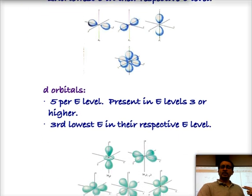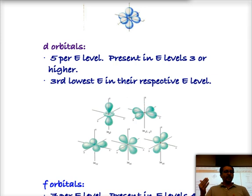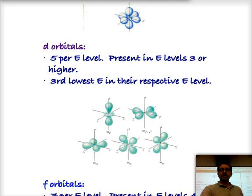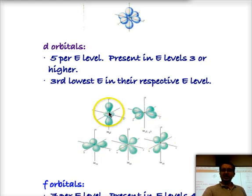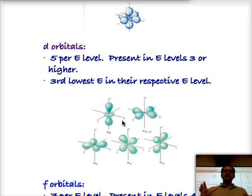The next orbital type is the D orbitals, which are present in energy levels three and higher. D orbitals come in groups of five. Their shape features four lobes, plus one slightly unusual figure-eight with a donut shape. D orbitals are higher in energy than P, so the ranking goes: S, then P, then D. You always get five D orbitals whenever a level has D orbitals.